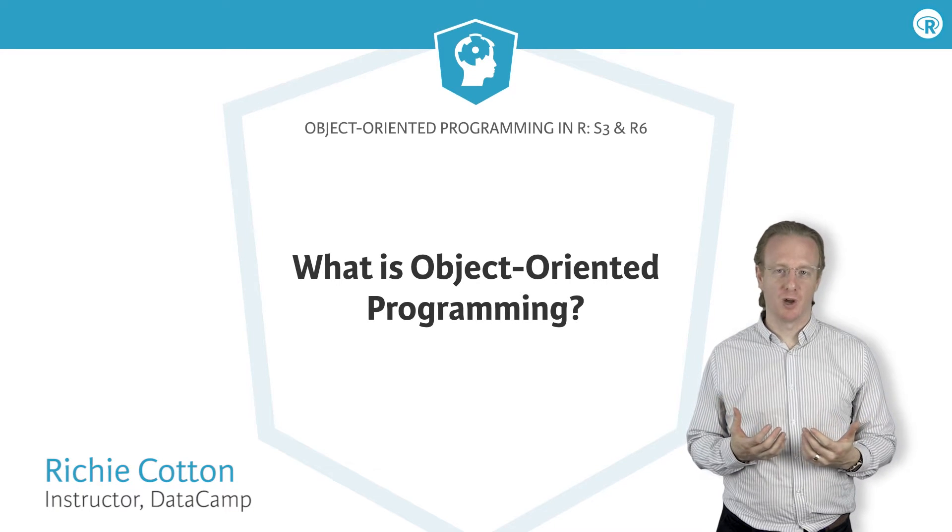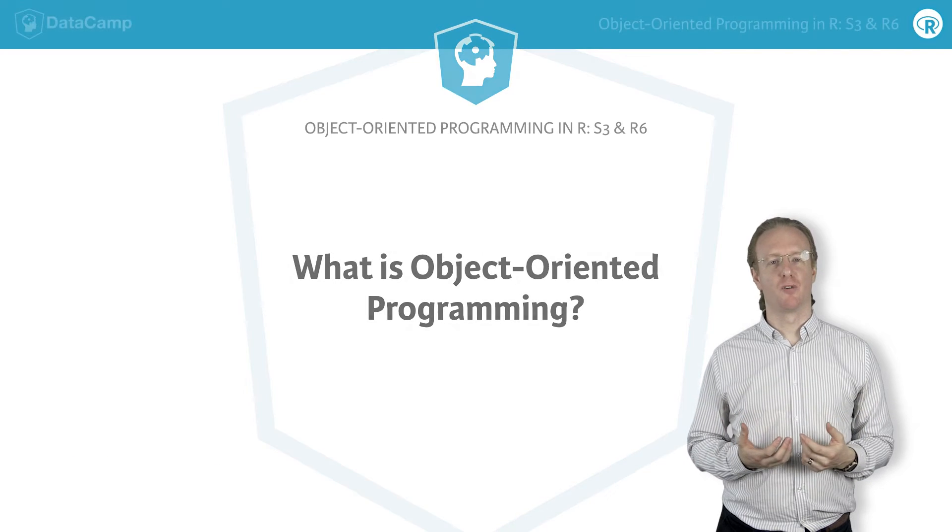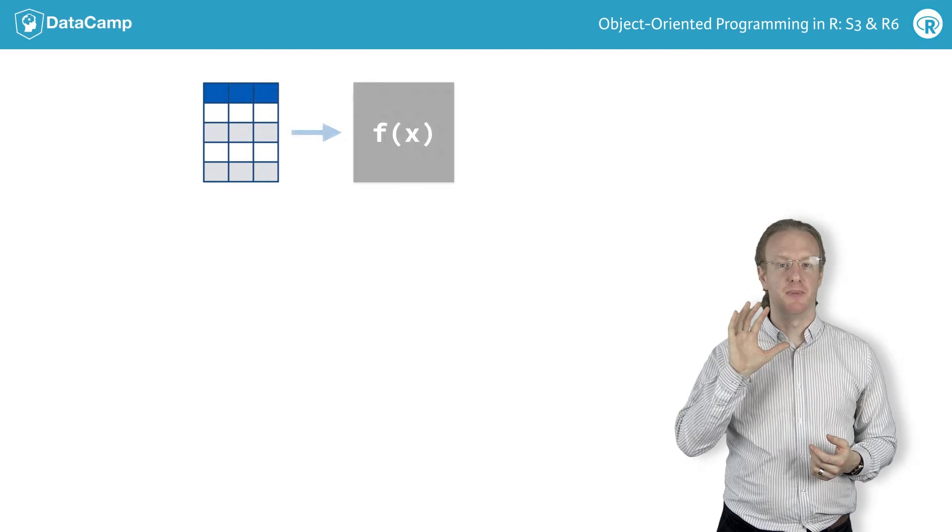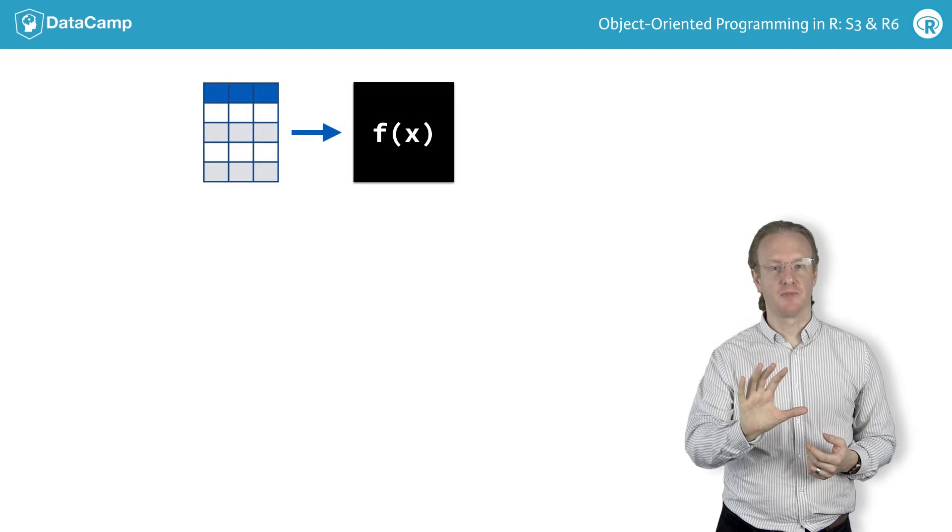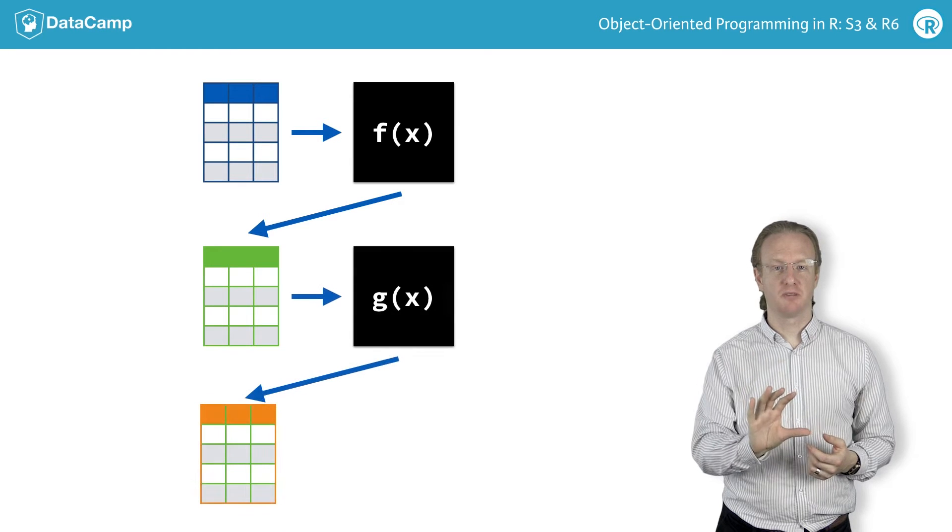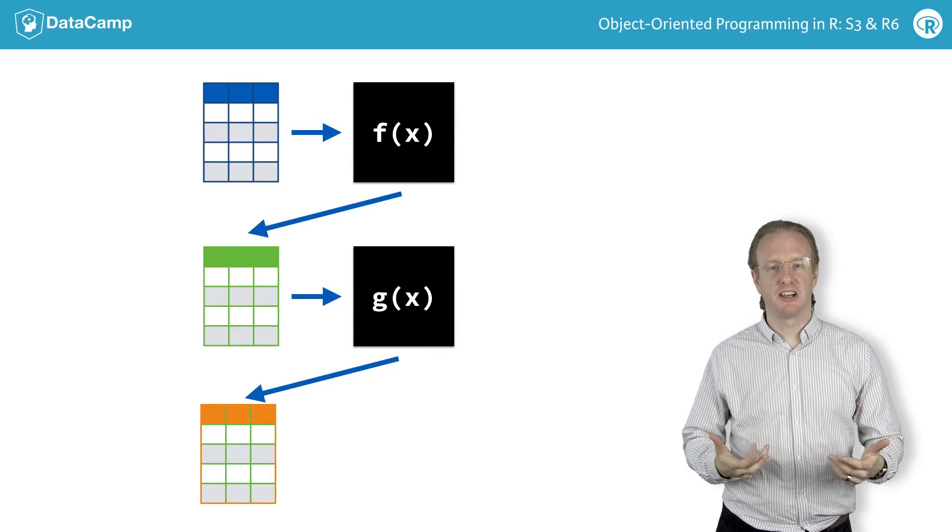Most of the time when you work with R, you use a functional programming style. That is, you start with some data, to manipulate it you apply a function, this returns some new data, then you apply another function, and you repeat this until you get an answer.